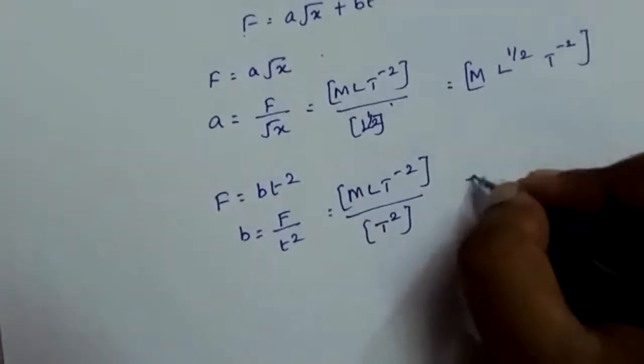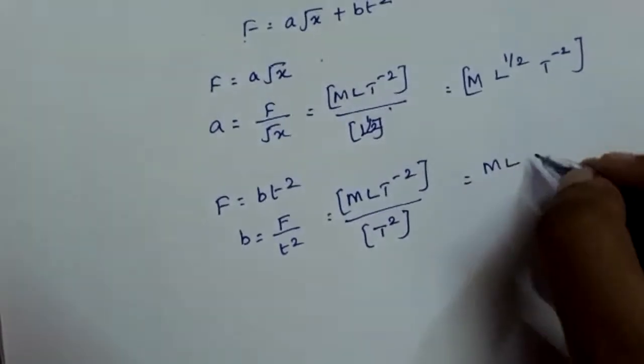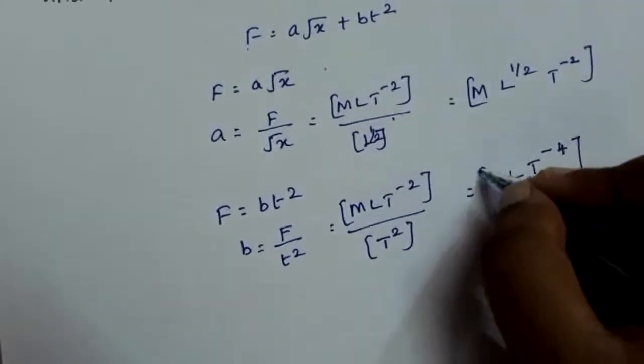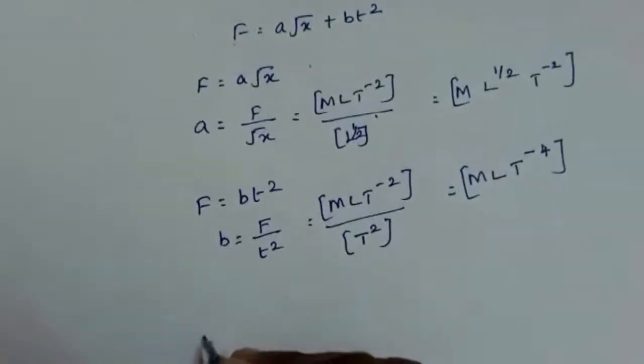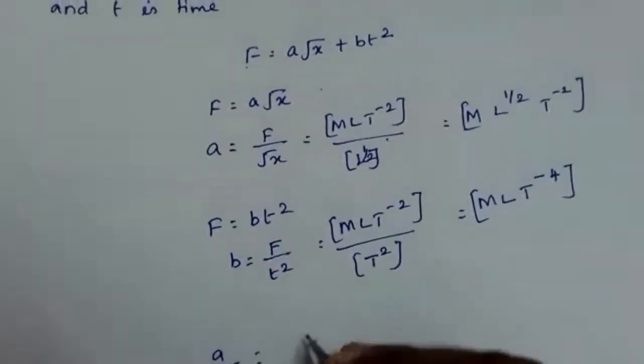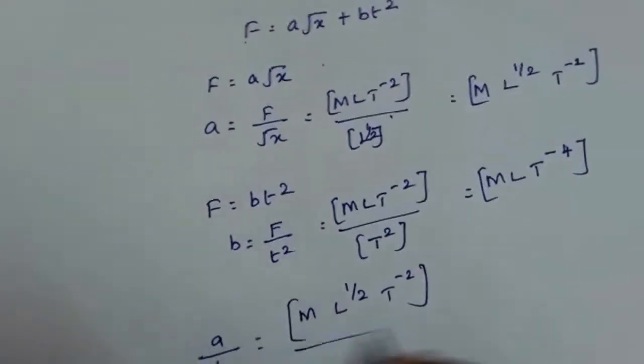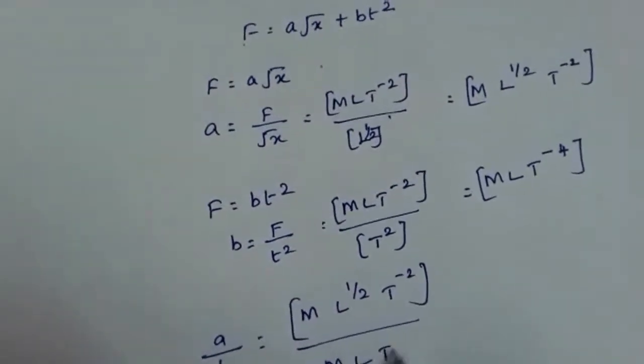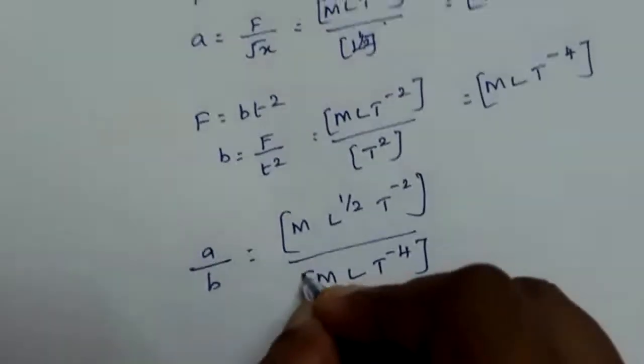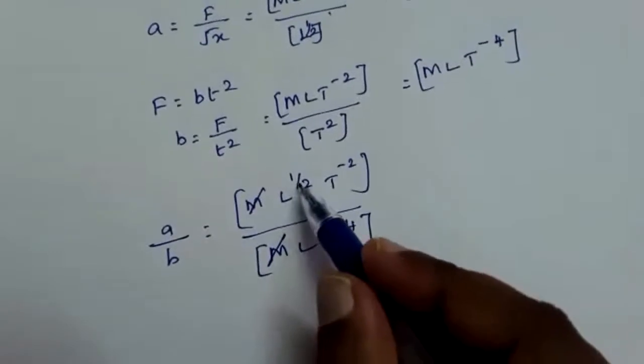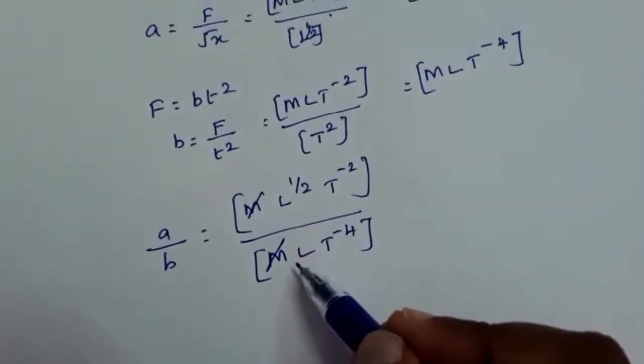Okay, now we have to find a/b. a/b = ML^(1/2)T⁻² divided by MLT⁻⁴. So M and M will get cancelled. So here it is half, here it is minus 1.